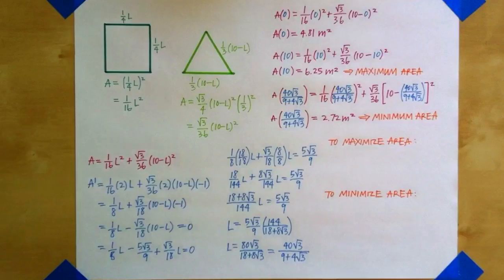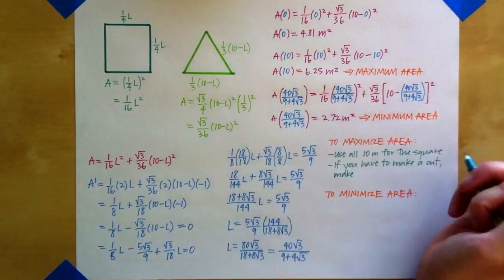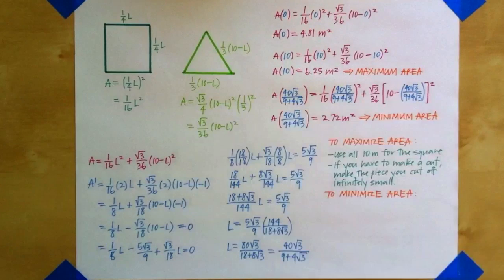Because we use the piece of wire of length L to create the square, that means that we maximize area when we use the entire wire to create the square, and none of it to create the triangle. Because the problem asked us to make a cut, if we have to make a cut, you want to say that we should cut off a piece infinitely small to make the triangle, and use as much as possible to make the square.